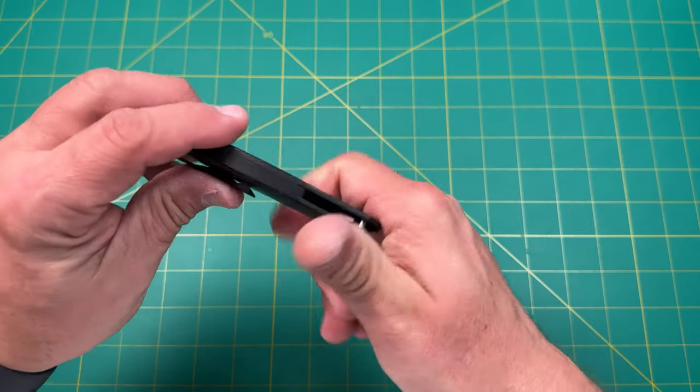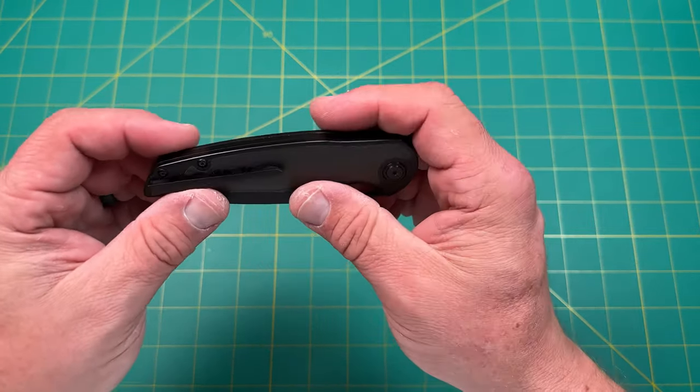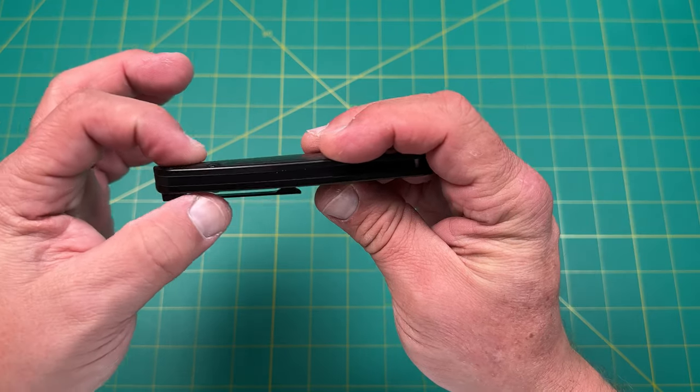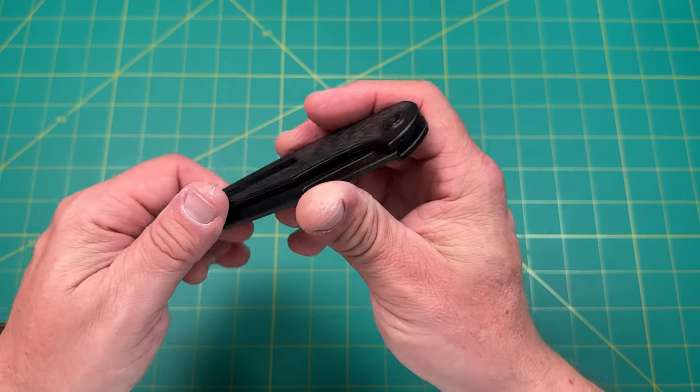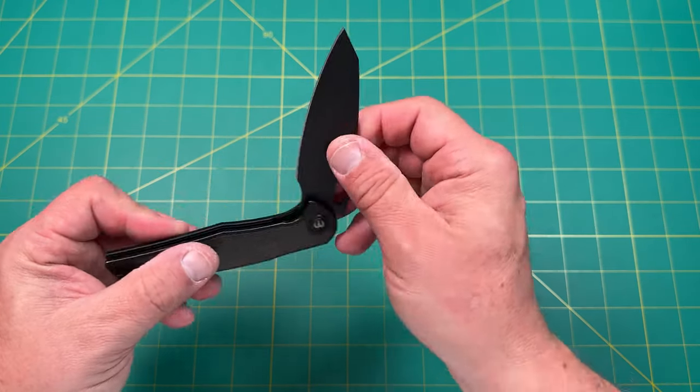And it's got a full back spacer all the way across. I know some people really like big back spacers. I sometimes like standoffs because it's easy to clean, easy to get to the knife. This adds a lot of weight. Some people love that. So you'll be happy if you want that.